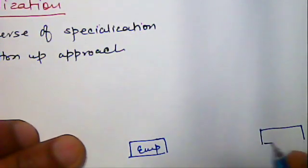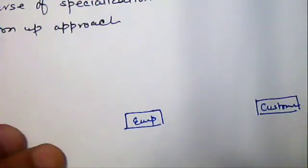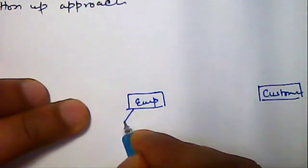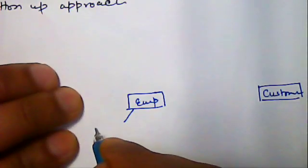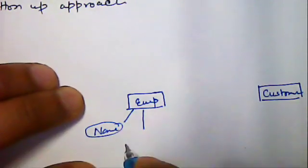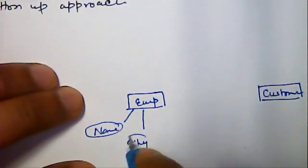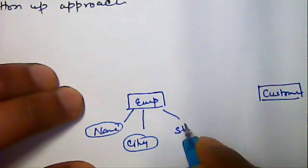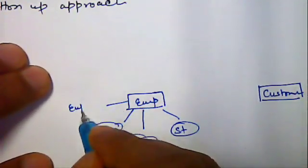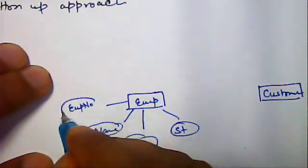We will start analyzing in reverse manner. Now the customer will have some attribute and employee will have some attribute like name, city, street, and then employee number.